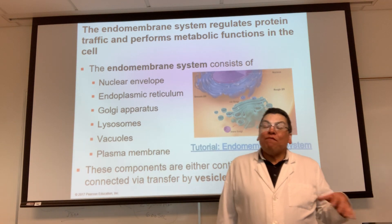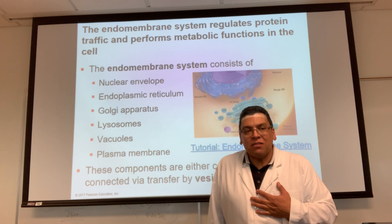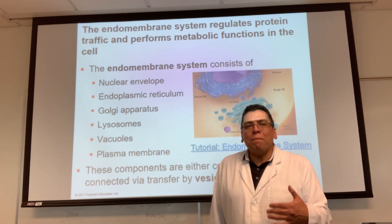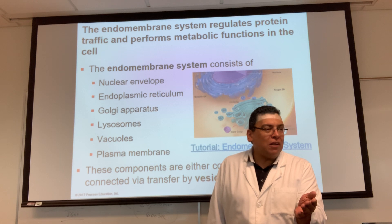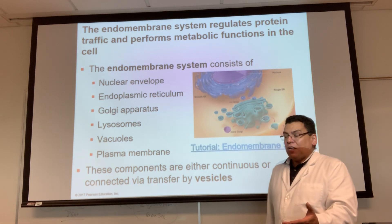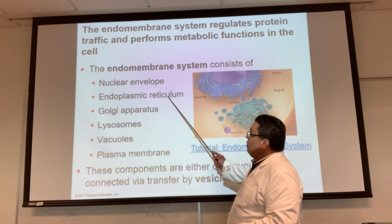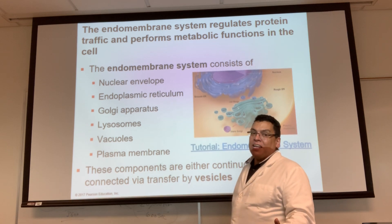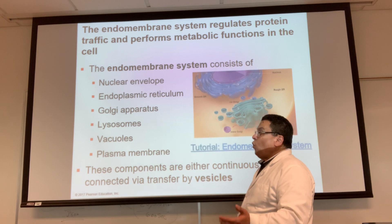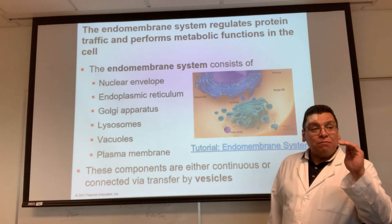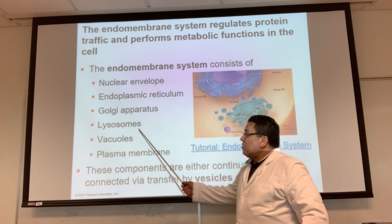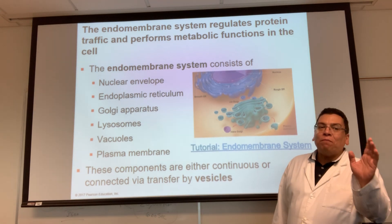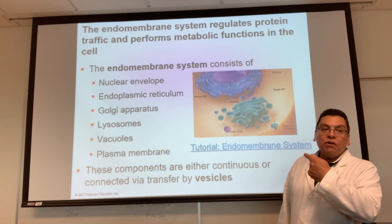If I'm making membrane proteins, do you think the plasma membrane is involved? Yes, because that's where they're going to live eventually. So when making a membrane protein, the nuclear envelope, endoplasmic reticulum, Golgi, vesicles, and plasma membrane are all involved. But when making hydrolytic enzymes, it's the lysosomes that are involved — not the plasma membrane. This is important and critical for your understanding.